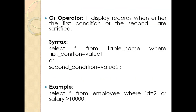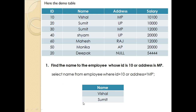Now, the OR operator. It displays records when either the first condition or the second condition is satisfied. If one condition is satisfied, we get a result; if two conditions are satisfied, we still get the result. The syntax is: SELECT * FROM table_name WHERE first_condition = value1 OR second_condition = value2. For example: SELECT * FROM employee WHERE id = 2 OR salary > 10000.